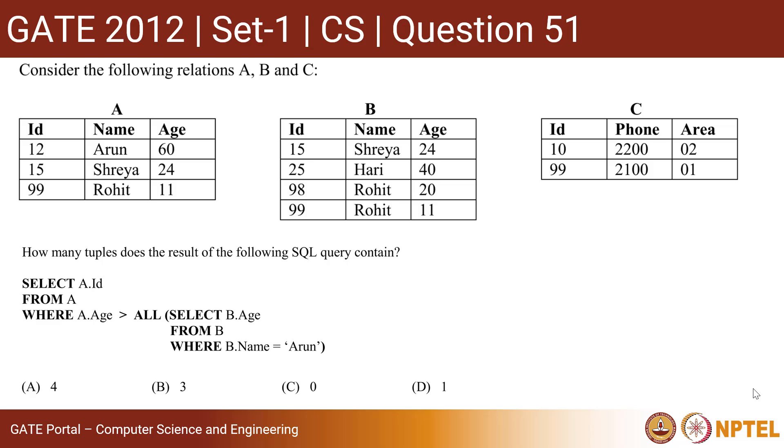The question says consider the following relations. There are three relations A, B, and C. These are the three relations A, B, and C.